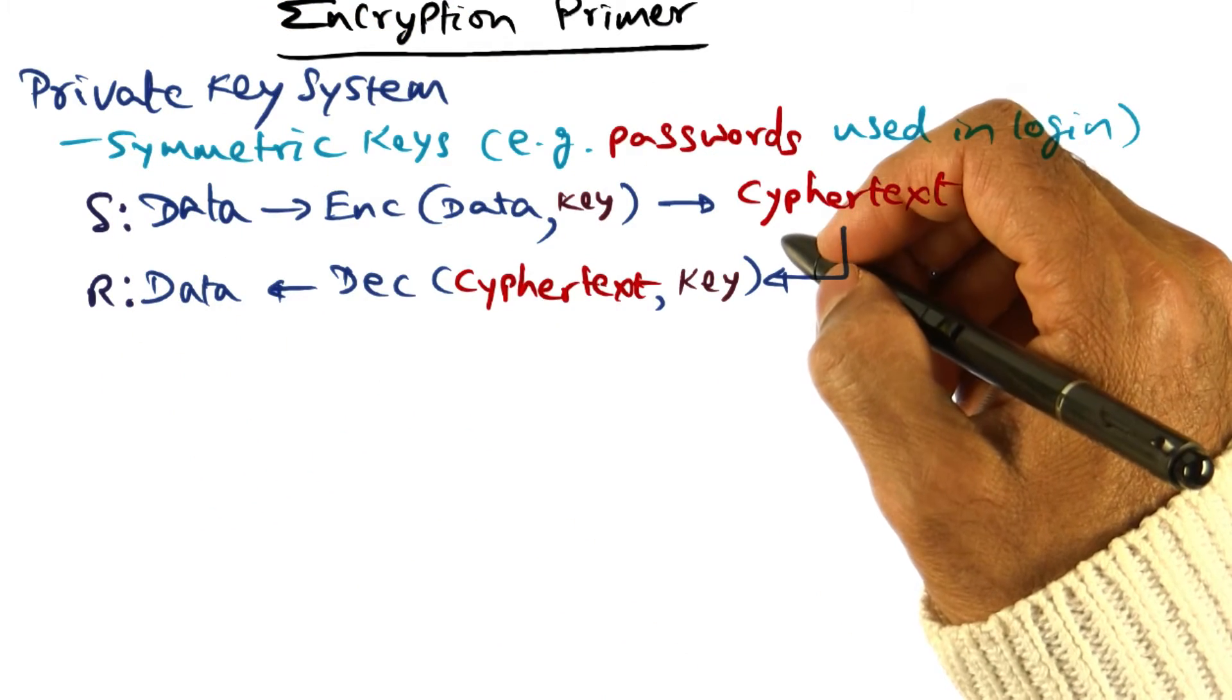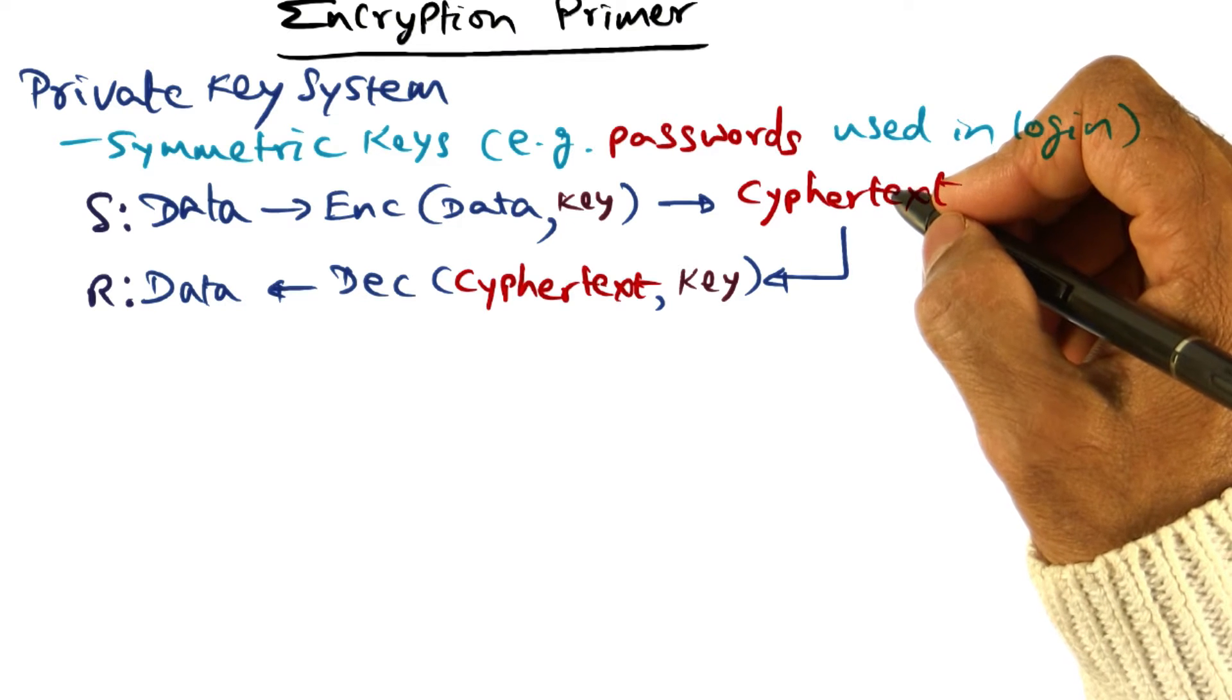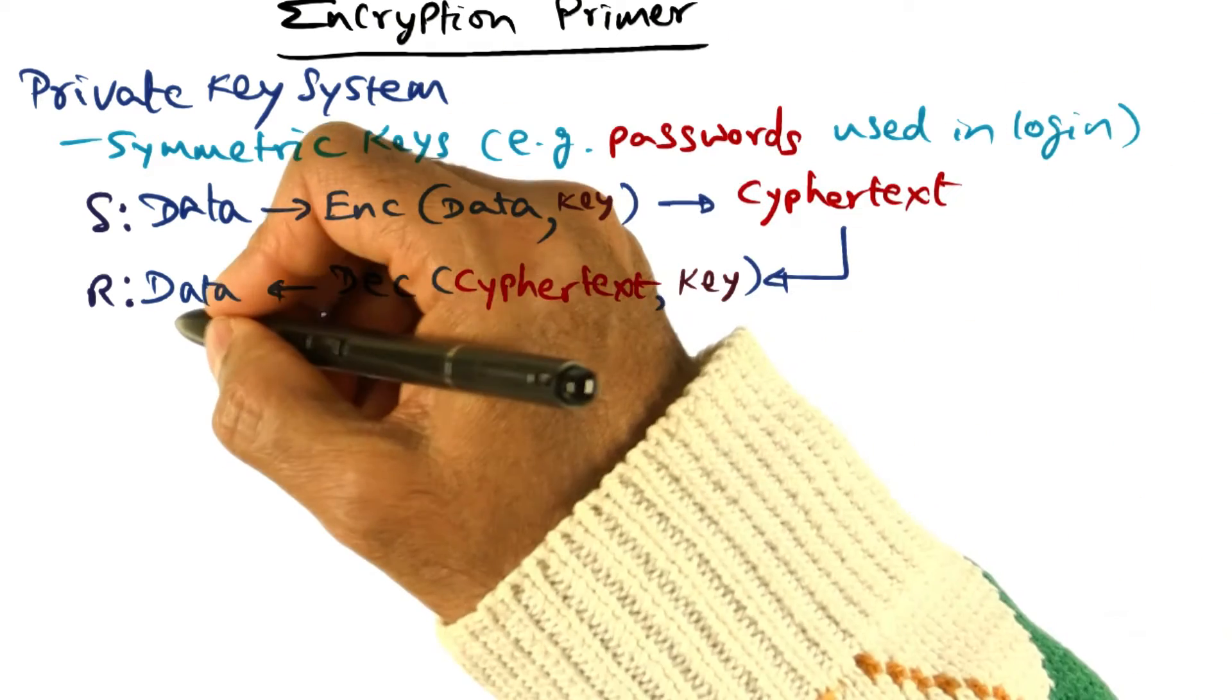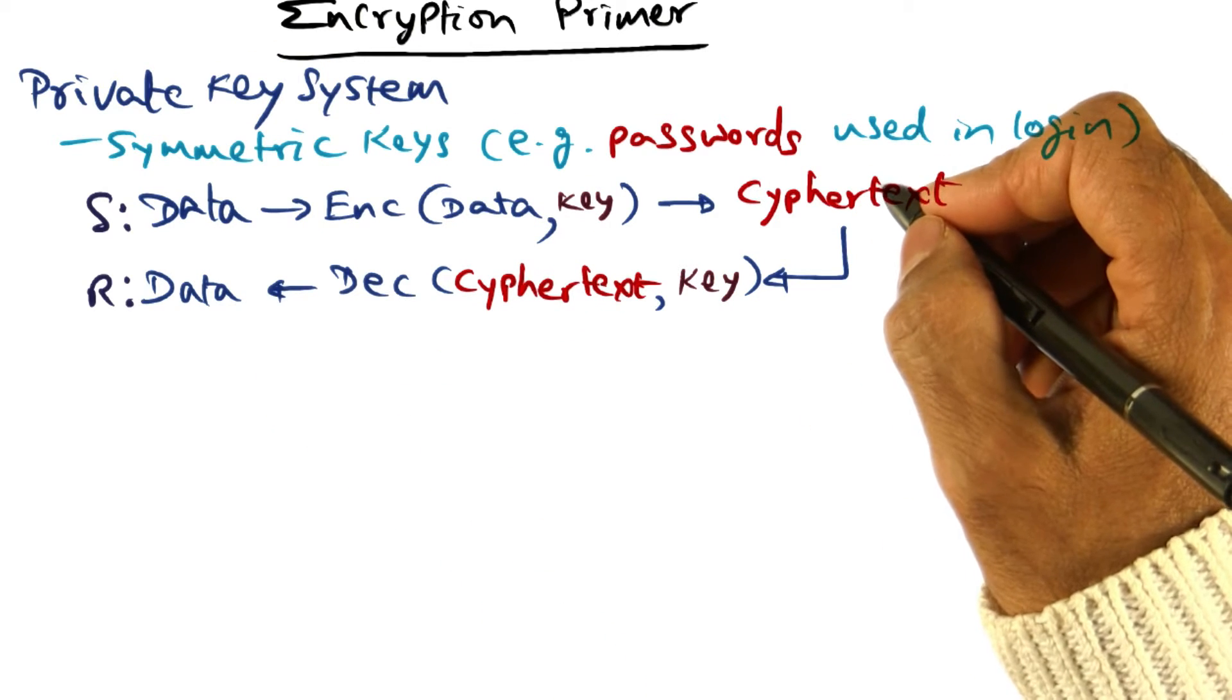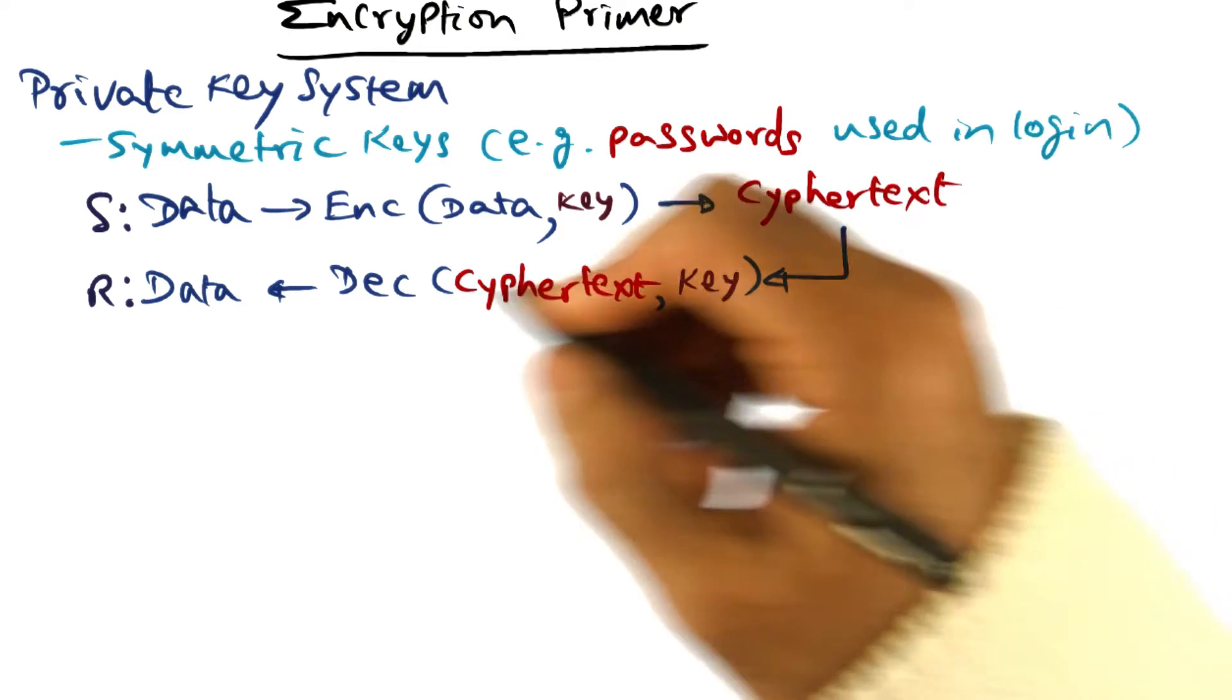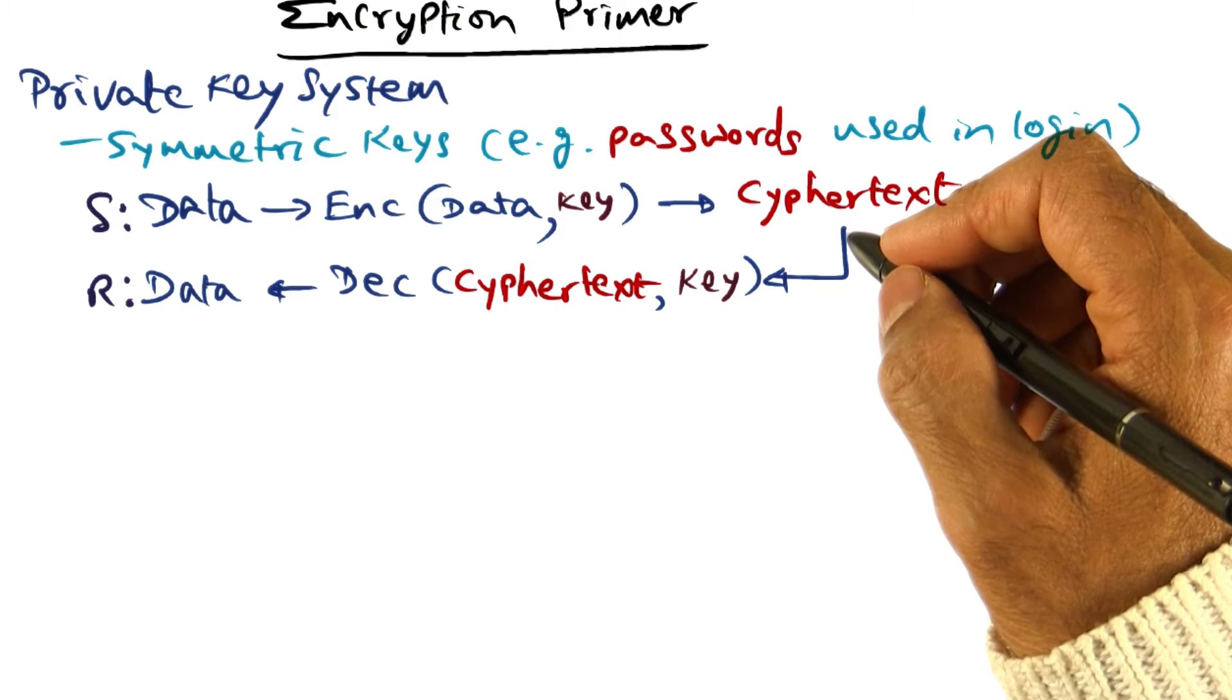This is where Salter's principle comes into play. That is, publish the design but protect the key. The keys are protected between the sender and the receiver. You're publishing the method by which you are transferring information between sender and receiver, namely using a private key encryption system.